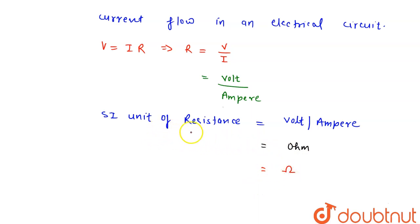The SI unit of resistance is volt per ampere, and volt per ampere is known as ohm. So the SI unit of resistance is ohm, and the sign of ohm is this.